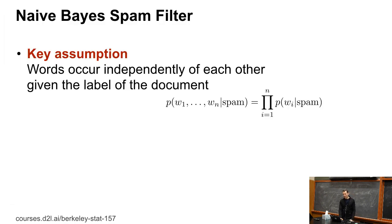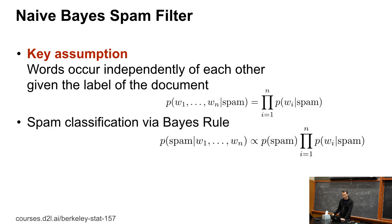So what's the key assumption in Naive Bayes? Well, I'm assuming that P of word one to word n, given spam, factorizes nicely into P of Wi given spam.